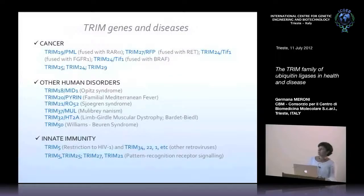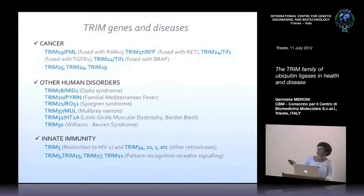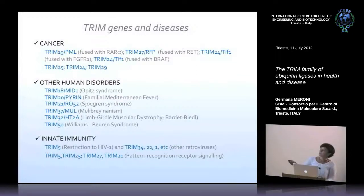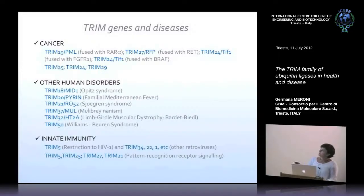We got interested in this family more than ten years ago when we found that one of these genes, MID1 or Trim18, was mutated in an X-linked genetic disorder called Opitz syndrome. The Trim genes are involved in many different pathological conditions. Other Trim genes are mutated in different genetic diseases like limb-girdle muscular dystrophies, forms of nanism, and familial Mediterranean fever. Many Trim genes are also involved in neoplasia development and progression.